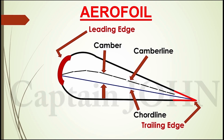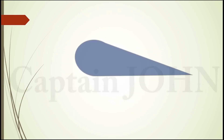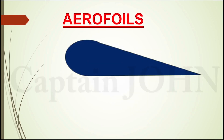The mean camber line is the locus of points midway between the upper and lower surfaces, and its shape depends on the thickness distribution along the chord. The thickness of an airfoil varies along the chord and may be measured in either of two ways: thickness measured perpendicular to the camber line, or thickness measured perpendicular to the chord line.